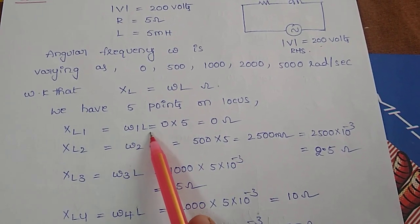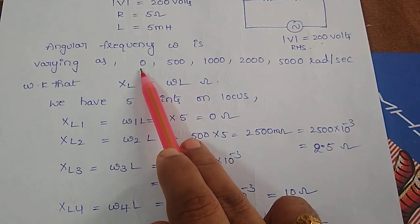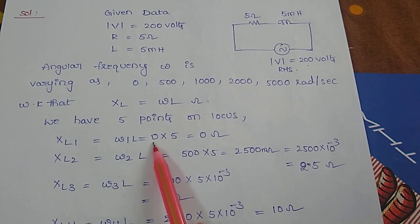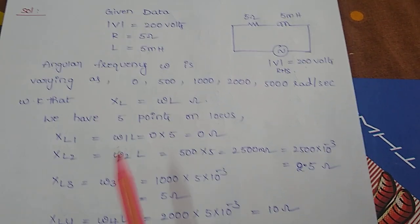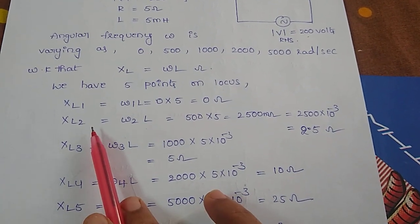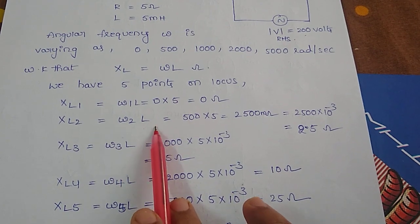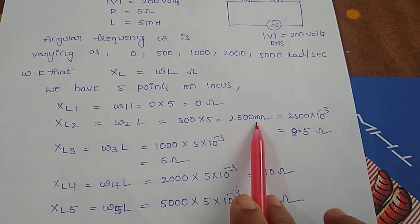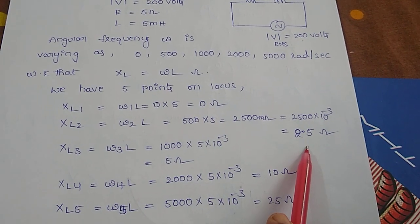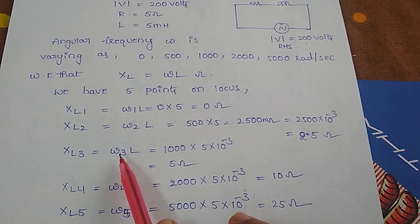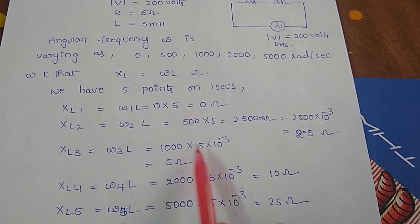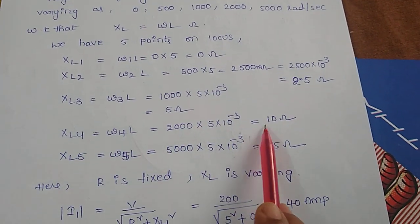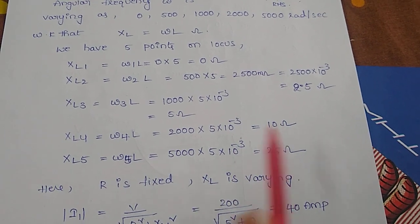XL1 equals omega 1 times L. Given omega 1 is 0 and inductance is 5 millihenry, so 0 times 5 equals 0 ohms. XL2 equals omega 2 L, so 500 times 5 millihenry gives 2.5 ohms. Similarly XL3 equals 1000 times 5 millihenry equals 5 ohms. Then XL4 equals 10 ohms, and XL5 equals 25 ohms.